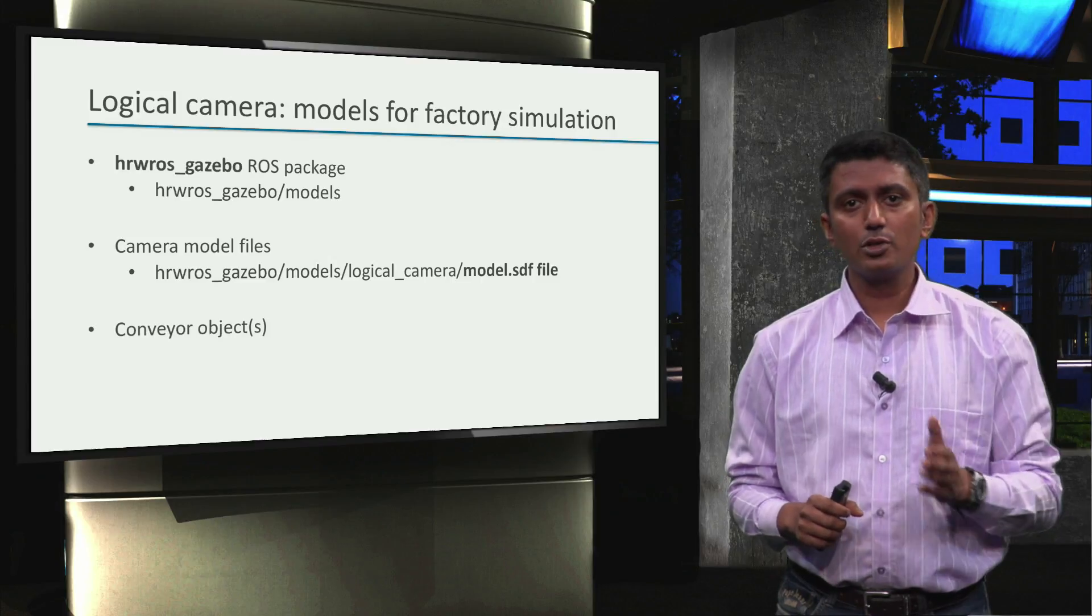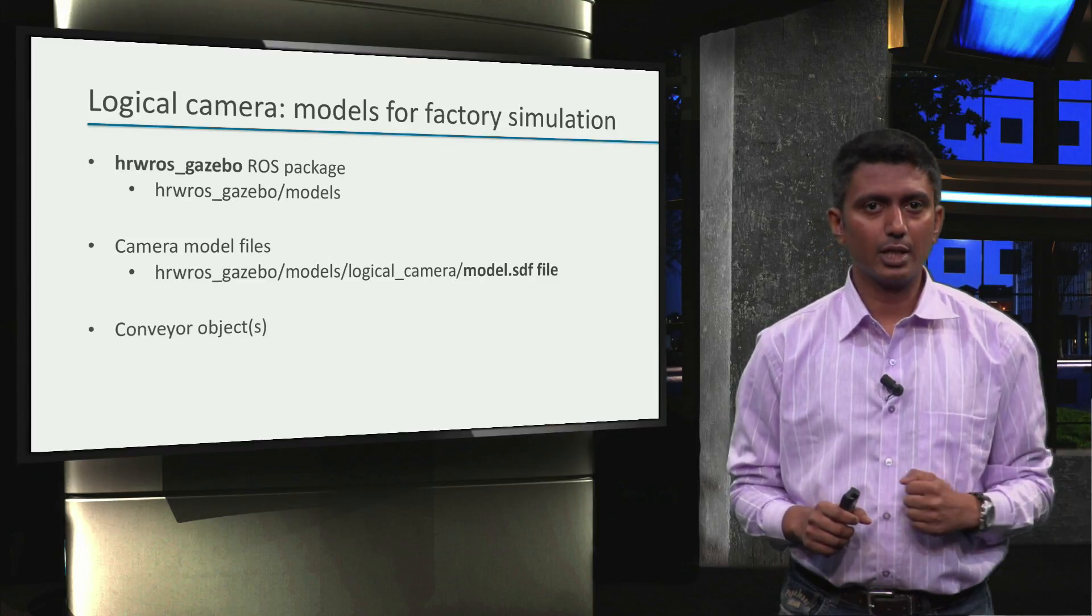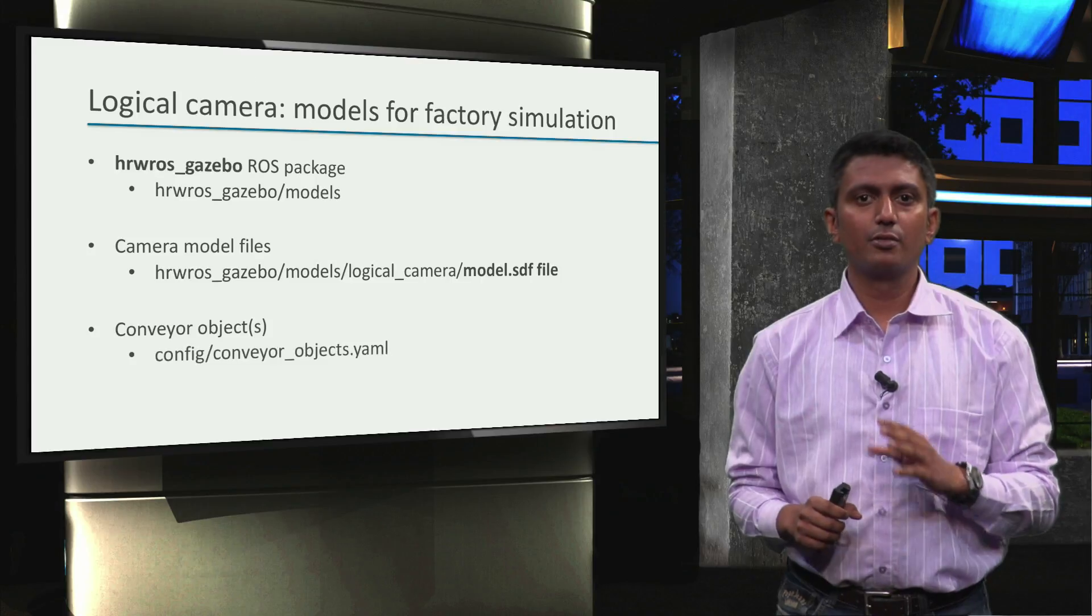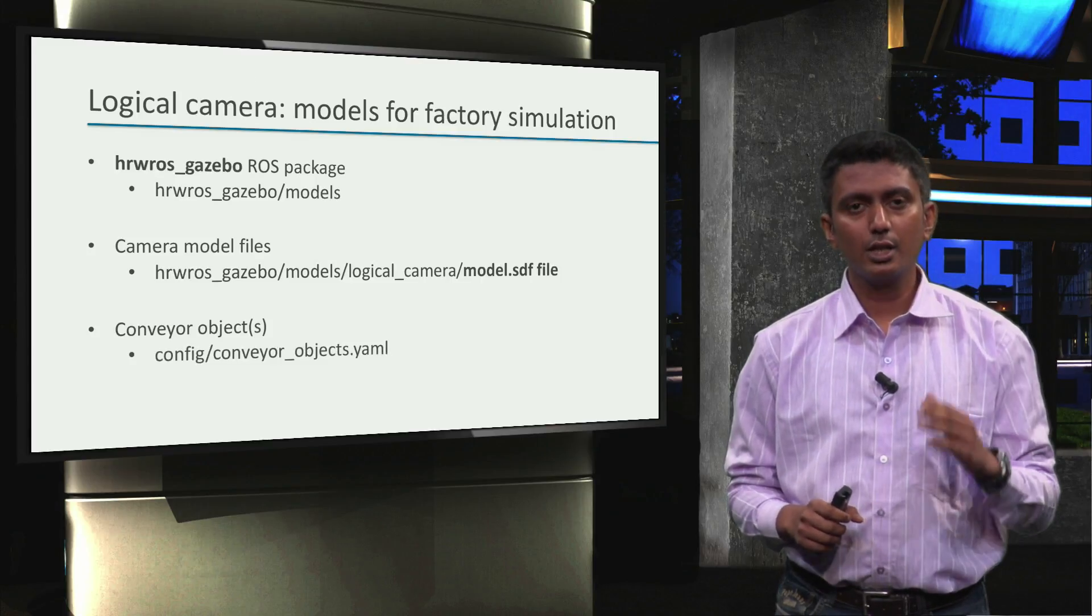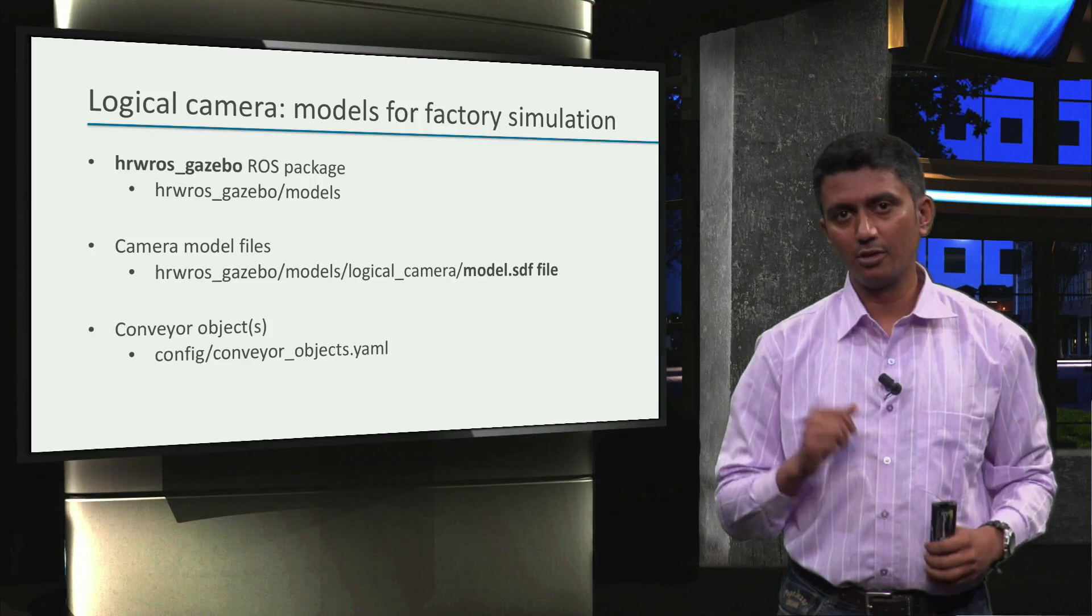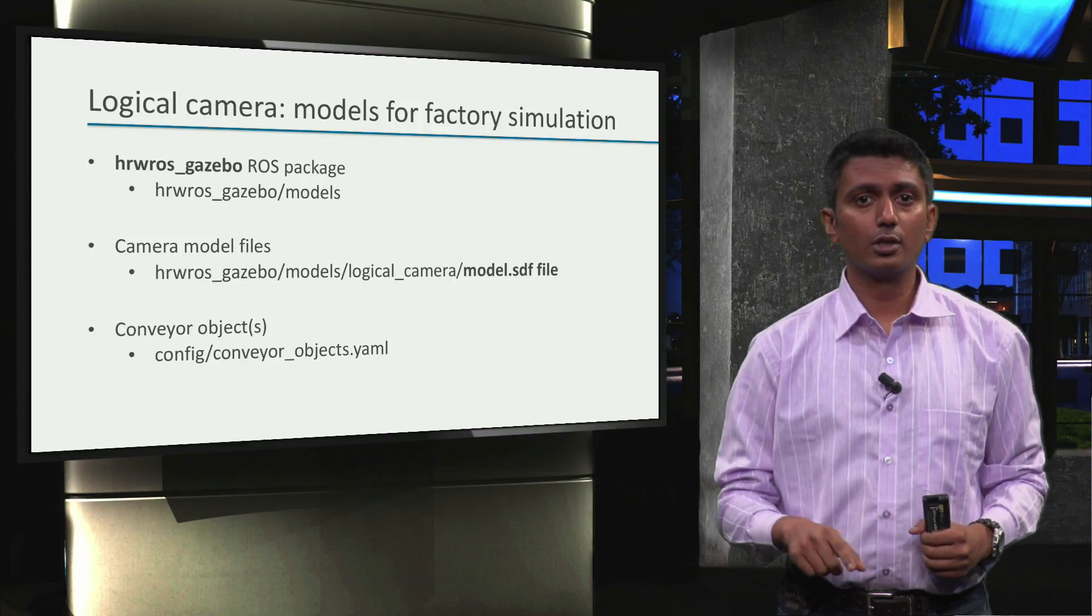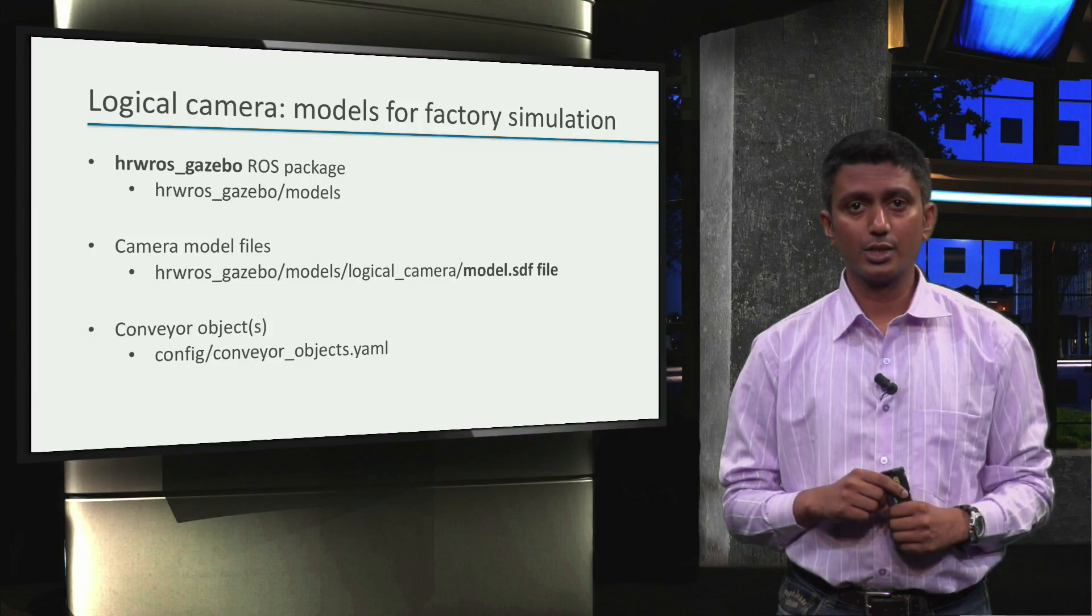And we will also have to pick up objects from the conveyor belt. The different objects we want to pick up from the conveyor belt are configured in the conveyor_objects.yaml file in the config folder of the hrwros_gazebo package.